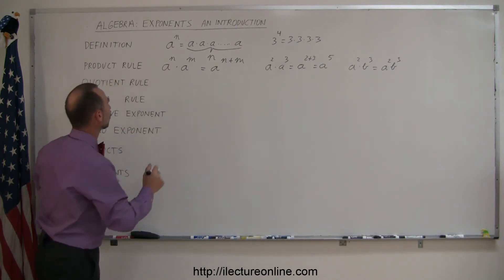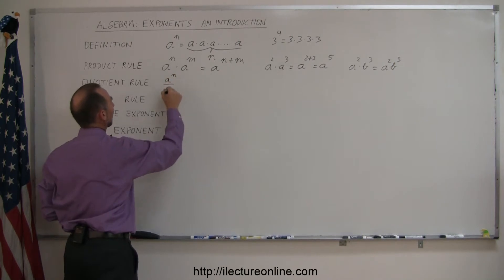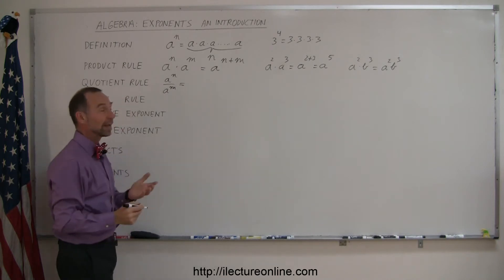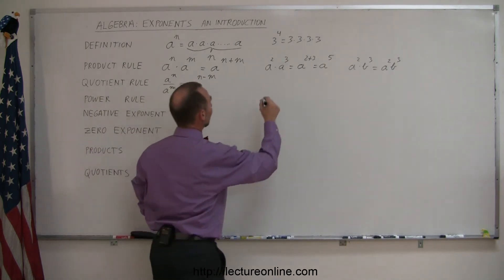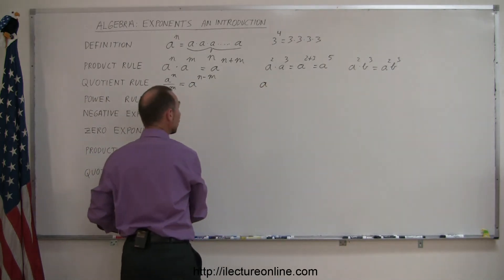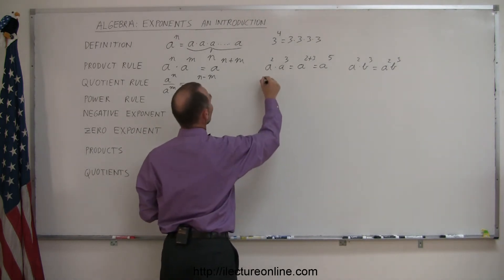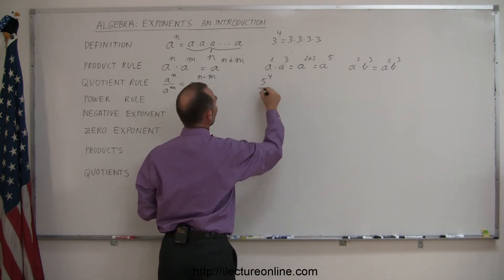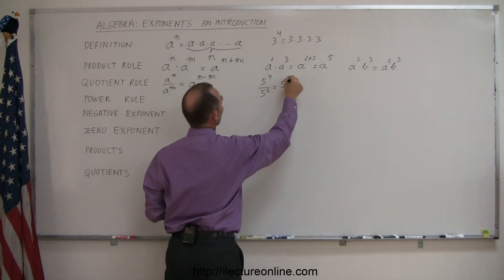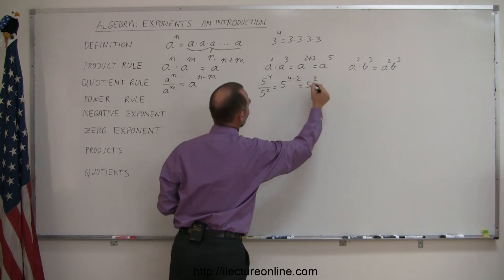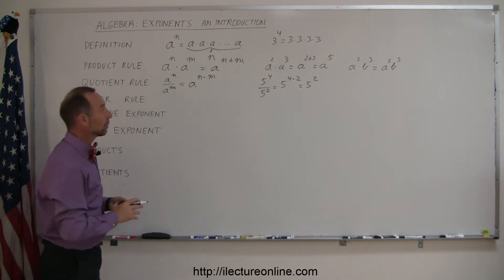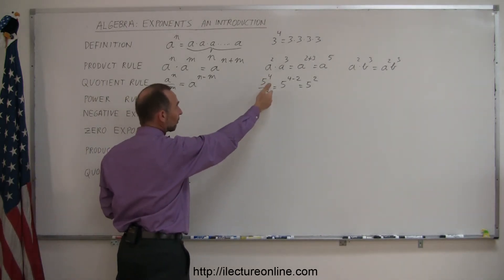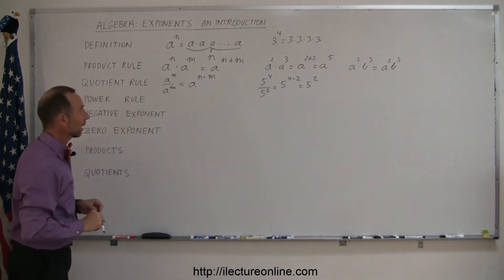Just like the product rule, we have a quotient rule. If we have a to the n power divided by a to the m power, again when the bases are the same, we simply subtract exponents. So this is equal to a to the n minus m power. As an example, if we have 5 to the fourth power divided by 5 to the second power, that's equal to 5 to the 4 minus 2, or 5 to the second power, which of course is 25. When we divide one number raised to an exponent by the same number raised to a different exponent, we simply subtract the exponents.